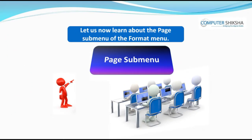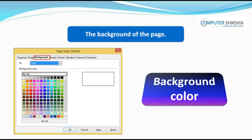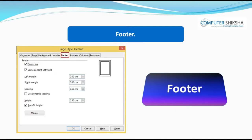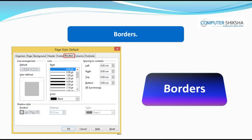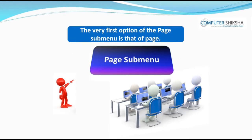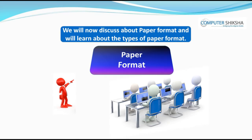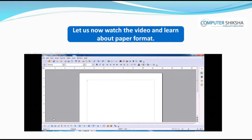Let us now learn about the page submenu of the Format Menu. Using the page submenu, you can manage the page, the background of the page, header and footer, border, columns, etc. The very first option of the page submenu is that of Page. The picture in front of you shows the options of the page submenu. We will now discuss paper format and learn about the types of paper format. Let us now watch the video and learn about paper format.